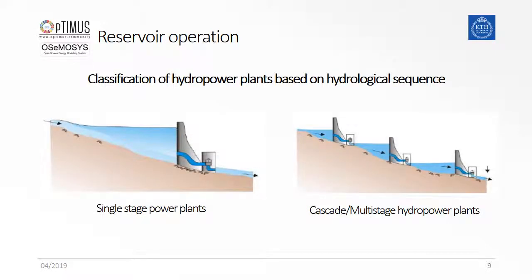Hydro dams can work as single stage power plants or in a hydrological sequence. When the runoff from a single hydropower plant is diverted back into the river or for any purpose other than power generation, the setup is known as single stage, as shown on the left hand side. When two or more hydropower plants are used in a series, such that the runoff discharge of one hydropower plant is used as the intake of the second hydropower plant, such a system is known as a cascade hydropower plant.